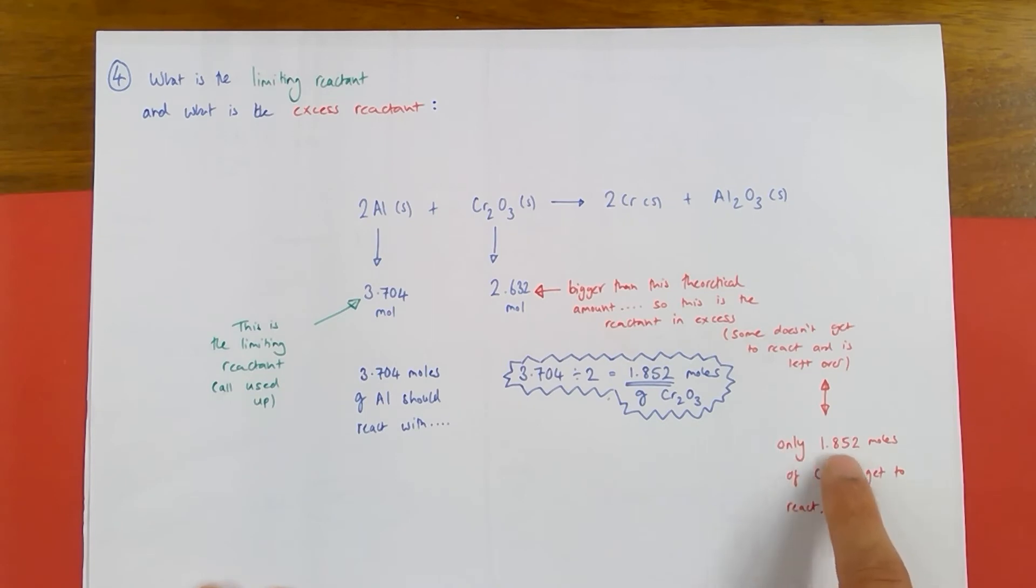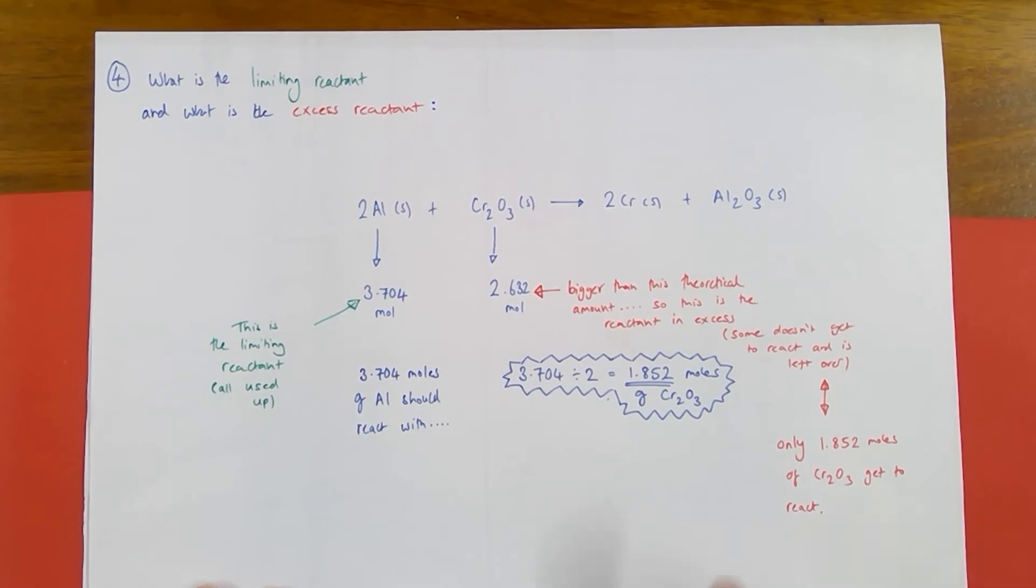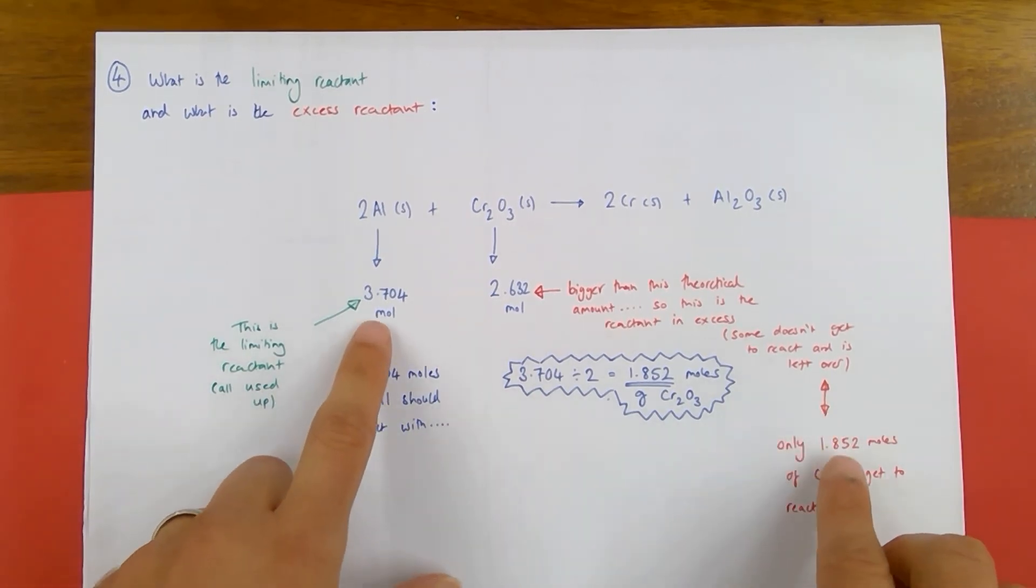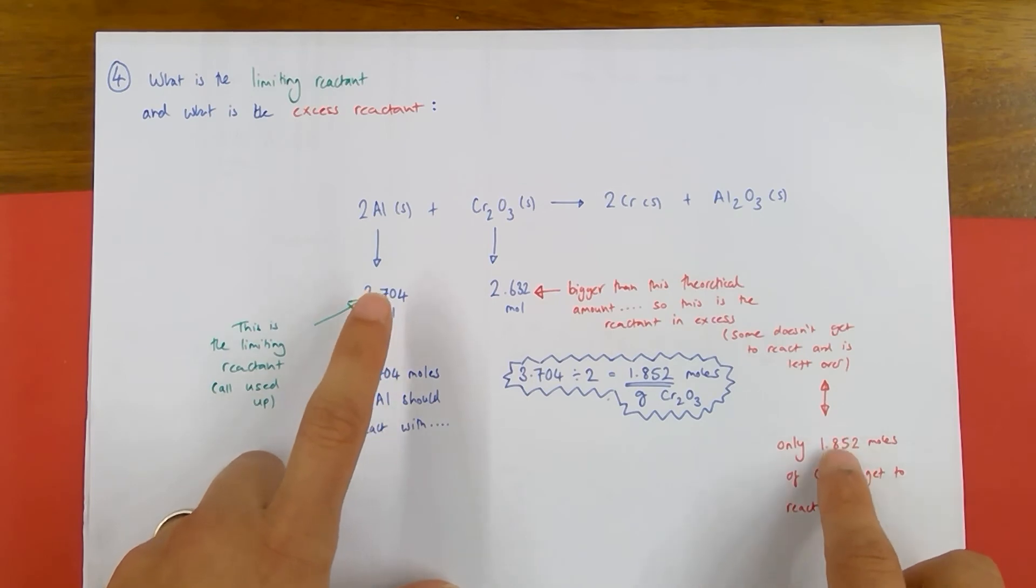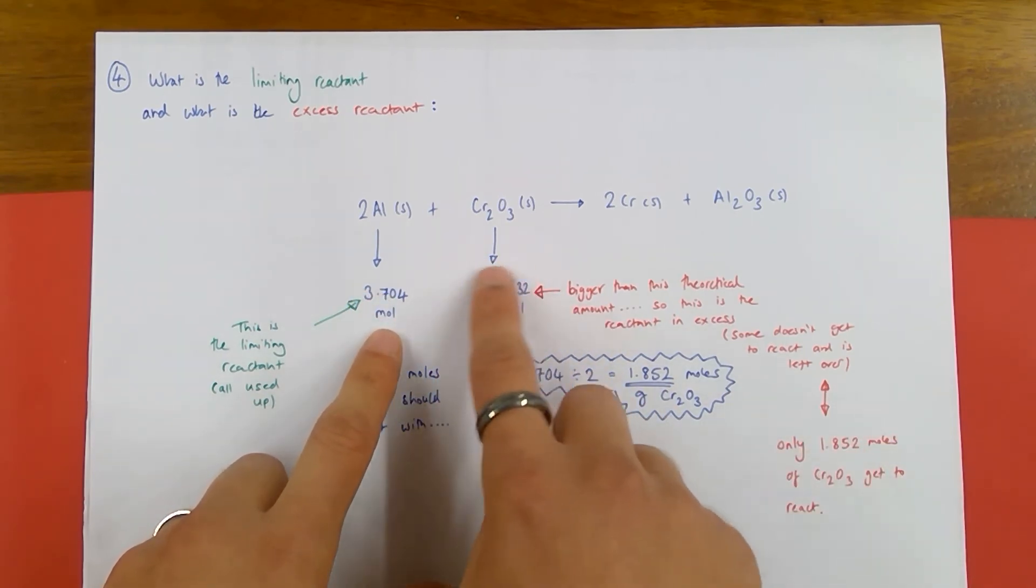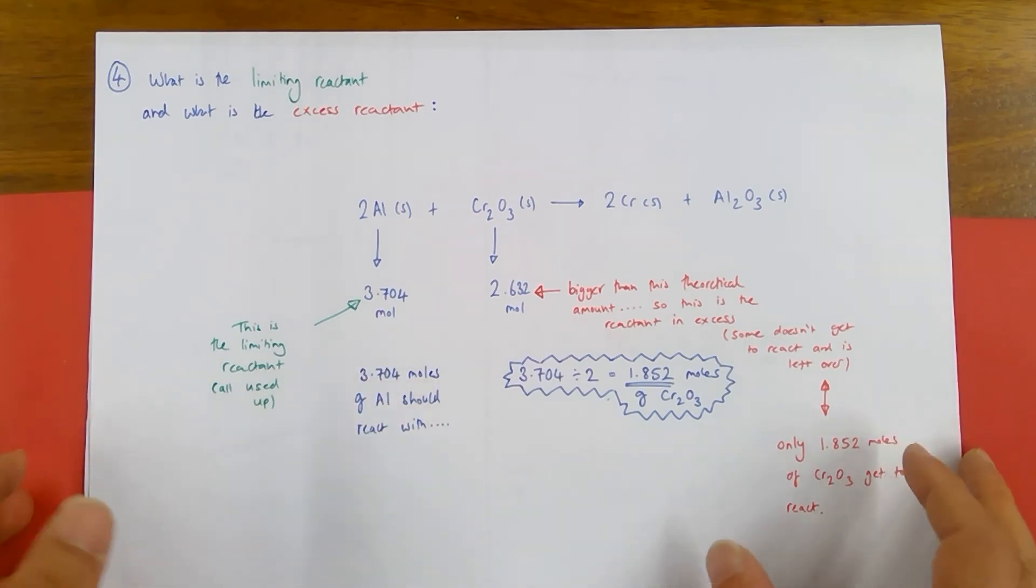that means that only 1.852 moles of chromium 3 oxide actually gets involved in the reaction and is actually reacted at all. This is important because now I can use these two numbers to work out my moles and also my mass of product, because these are the ones which are dictating what's actually happening in the reaction, and all that excess chromium oxide isn't doing anything at all.